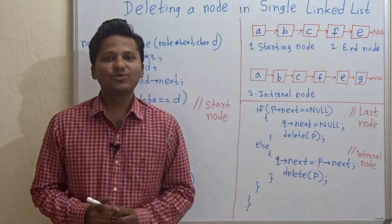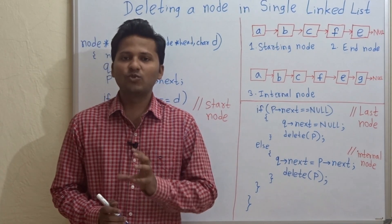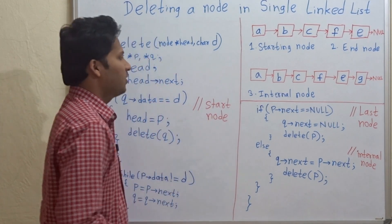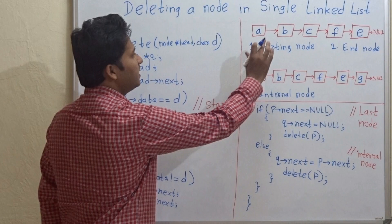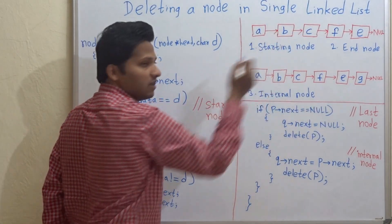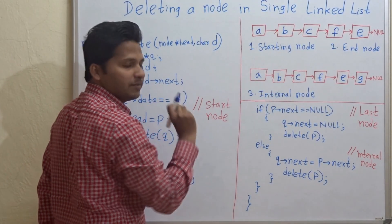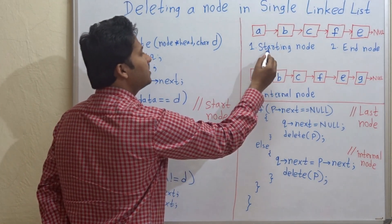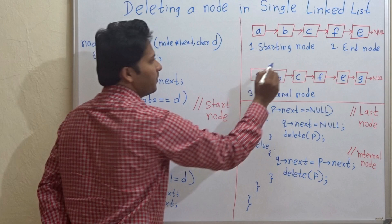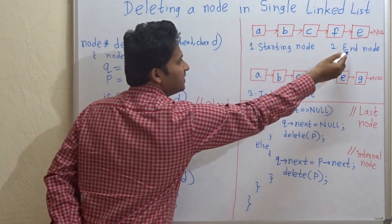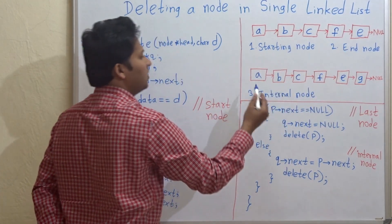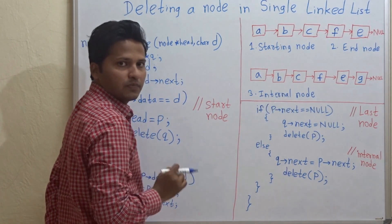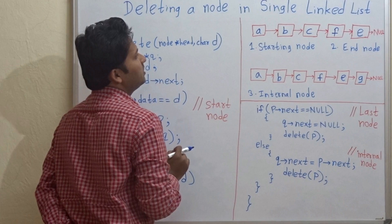Hello friends, today we are going to see how to delete a node from a singly linked list. When deleting a node from a linked list, there are three types of node. The first is that the node can be a starting node. The second is that the node can be an ending node. And the third is that the node can be an internal node.